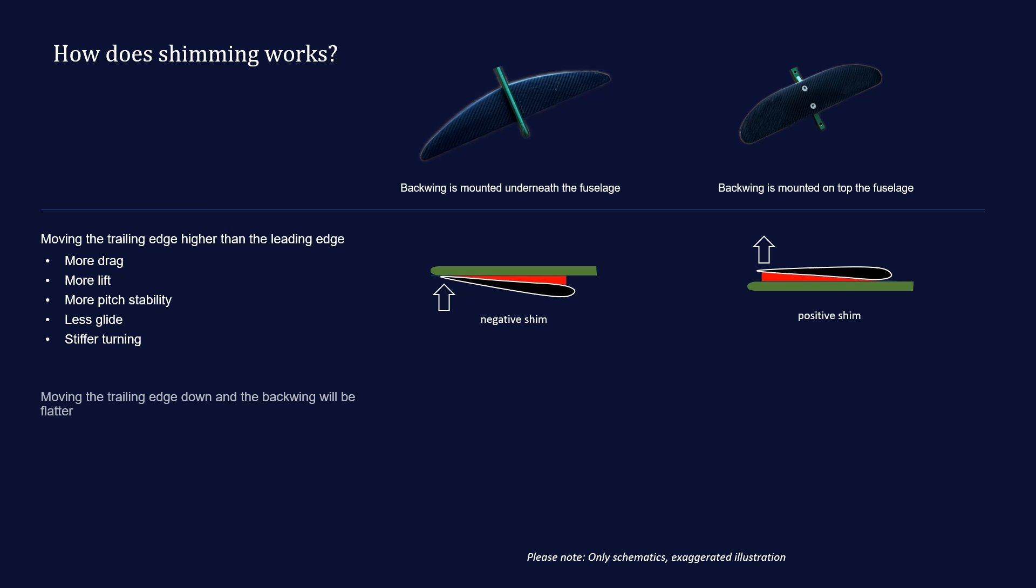In case you want to move the trailing edge down to have a flatter positioned back wing, that will result in less drag, less lift, less stability, more glide, and a looser feeling. You have to choose a positive shim in case the back wing is mounted underneath the fuselage and a negative shim in case the back wing is mounted on top of the fuselage.